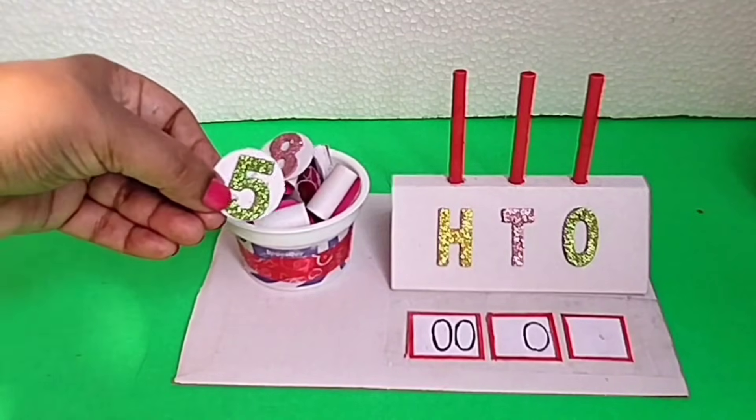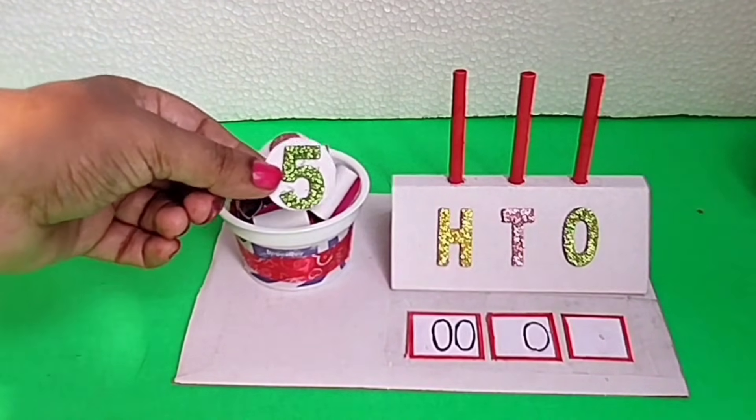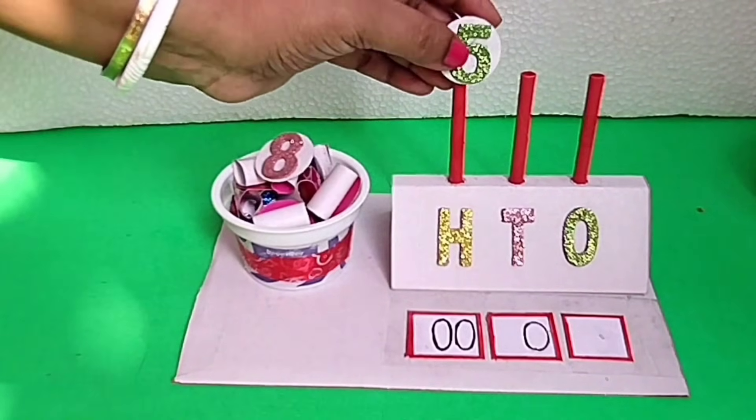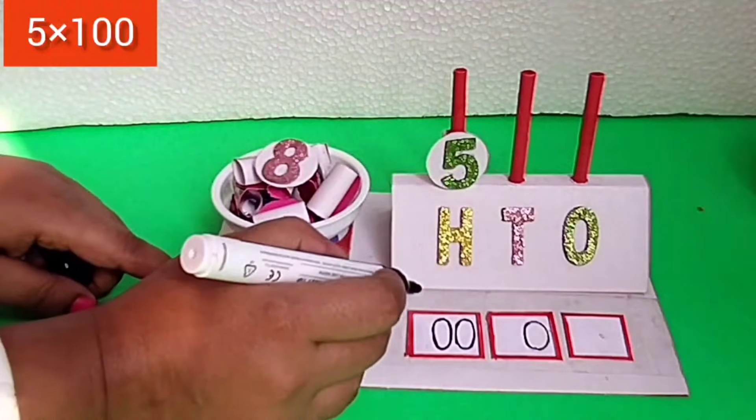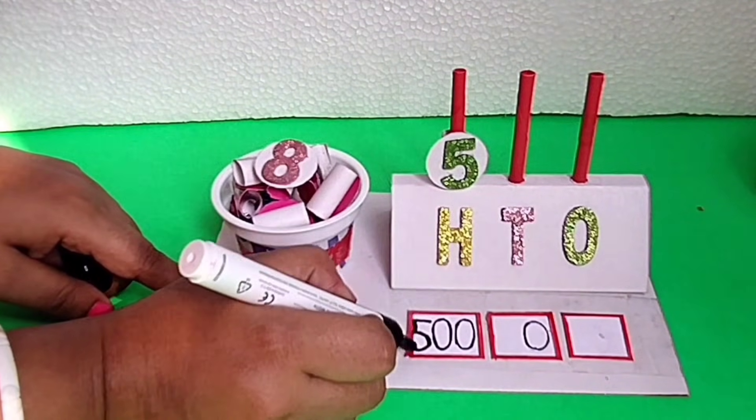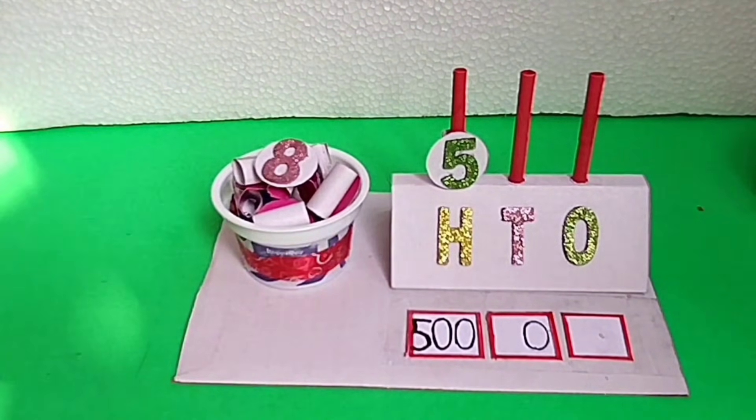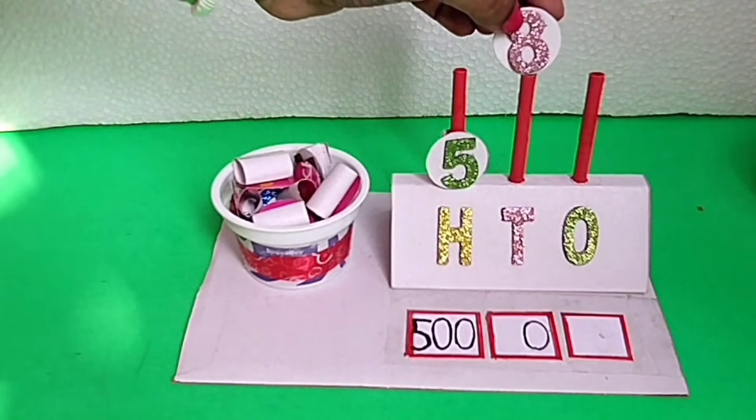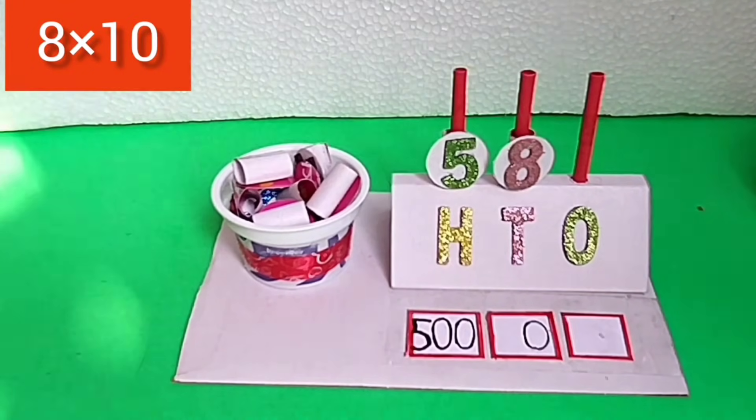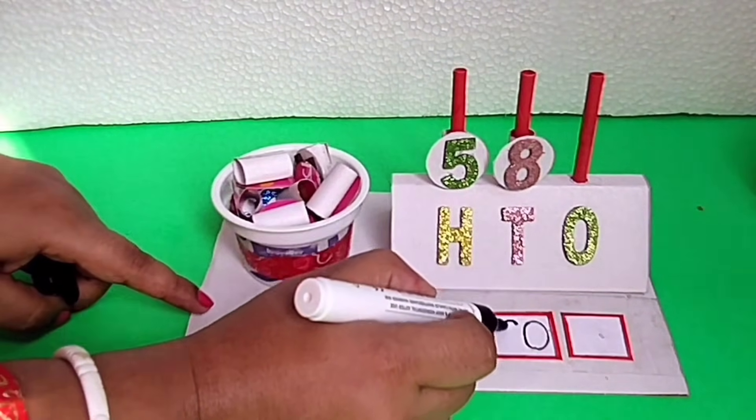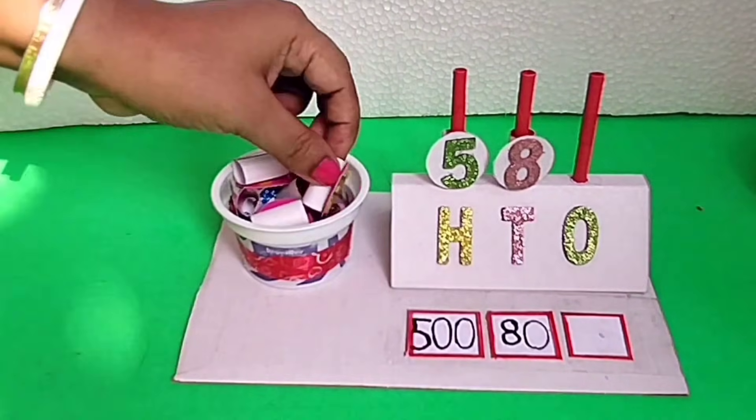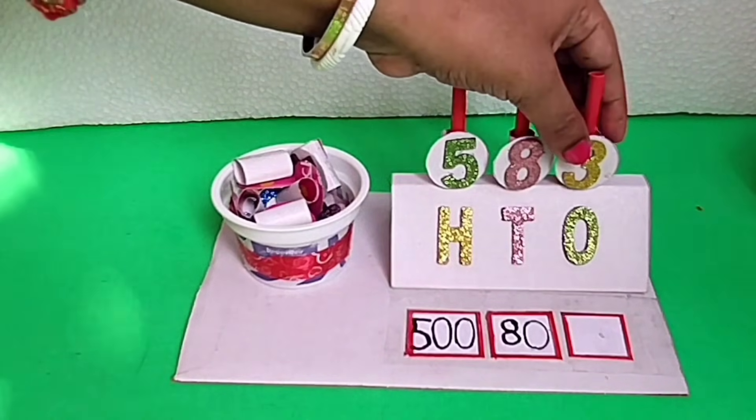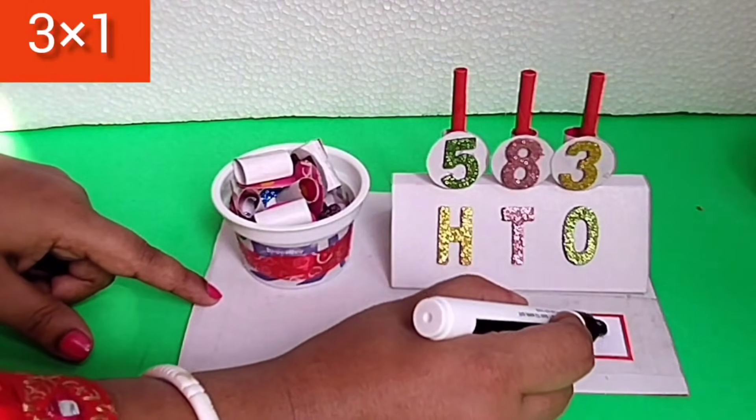The face value of a digit is the digit itself. Thus, the face value of 5 is 5. But when we put this digit in the place of hundreds, it means there are five hundreds, so the place value of 5 is 500. The face value of digit 8 is 8. As the number 8 is in the tens column, it means there are 80, and the place value of 8 is 80. The face value of 3 is 3. When we put the number 3 in ones column, the place value of 3 is 3.